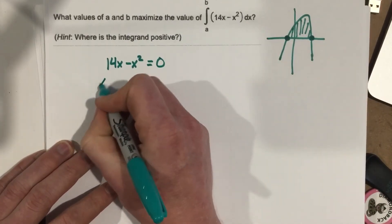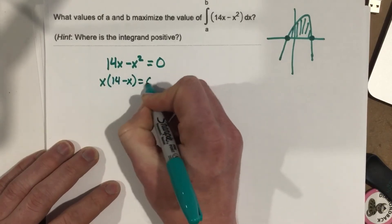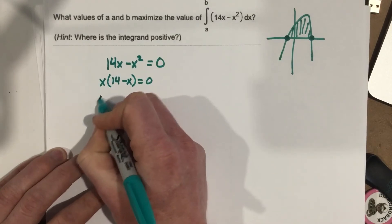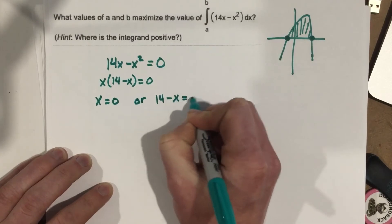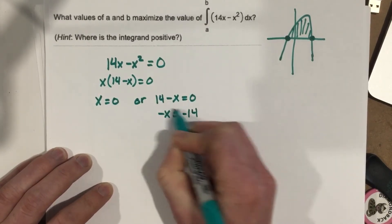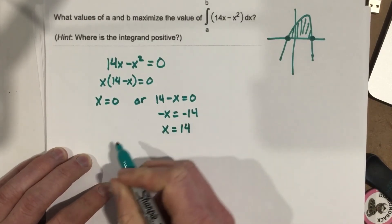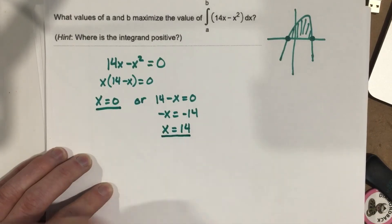Let's do a little factoring here. So we're going to end up with x(14 - x) equals 0. We can go ahead and then use the zero product property, so x has to equal 0, or 14 minus x equals 0. Negative x equals negative 14 by subtracting the 14 over, and divide by negative, x equals 14. So one of my roots is 0, and the other root is 14.